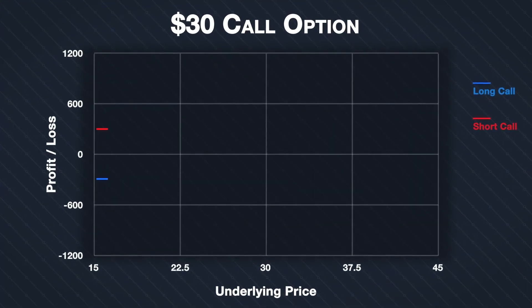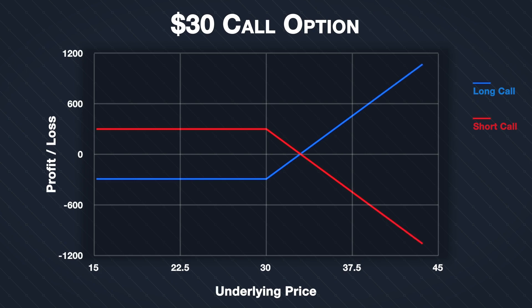Apart from any trading fees, an option contract is a zero-sum game. Any profit made by a call option buyer will result in an equal loss made by the call option seller. Conversely, any loss made by a call option buyer will result in an equal profit made by the call option seller. This relationship means the profit or loss chart for the call option seller is similar to the chart for the buyer, but flipped around the x-axis.